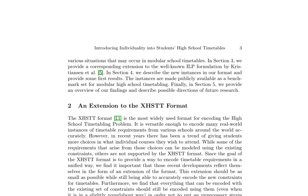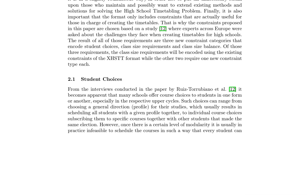The new constraints are categorized into student choices, class size requirements, and class size balance. The student choices constraint ensures that students with similar profiles are scheduled together, while class size requirements are encoded using existing constraints. The extension aims to be as small as possible while accurately encoding the new constraints, ensuring it only includes useful constraints for those creating timetables.